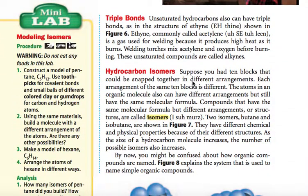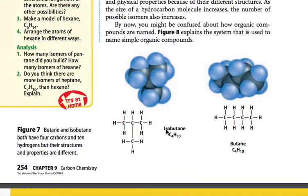Hydrocarbon isomers: suppose you had 10 blocks you could snap together in different arrangements like Legos. Each arrangement of the same 10 blocks is different. The atoms in an organic molecule can also have different arrangements but still have the same molecular formula. Compounds that have the same molecular formula but different arrangements or structures are called isomers. Two isomers — butane and isobutane — are shown in Figure 7. Each has 4 carbons and 10 hydrogens, but they look different. That's why it's called an isomer.